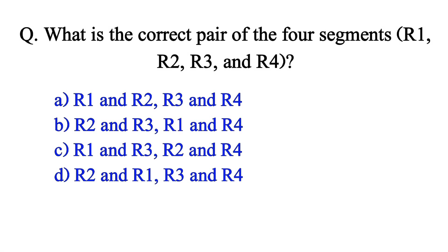What is the correct pair of the four segments R1, R2, R3, and R4? Option A: R1 and R2, R3 and R4. Option B: R2 and R3, R1 and R4. Option C: R1 and R3, R2 and R4. Option D: R2 and R1, R3 and R4. The correct answer is Option B: R2 and R3, R1 and R4.